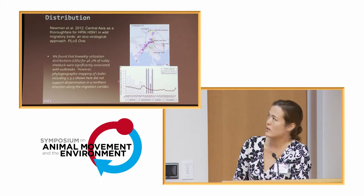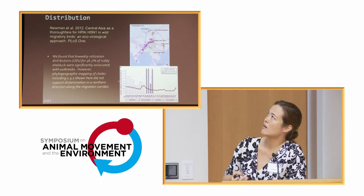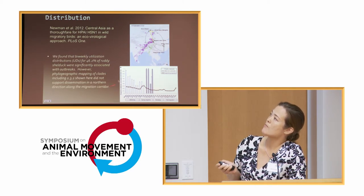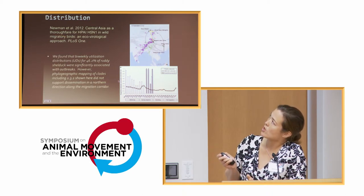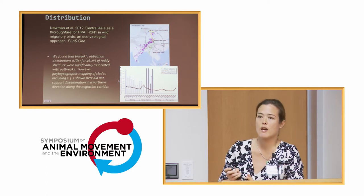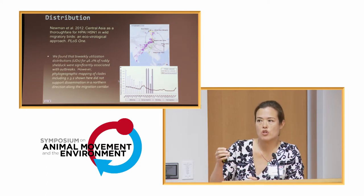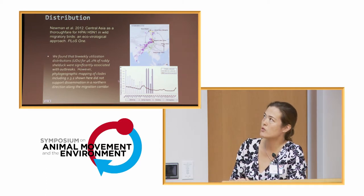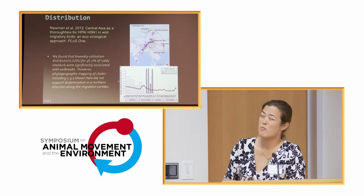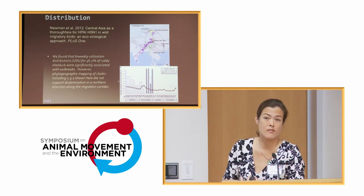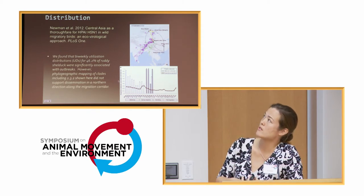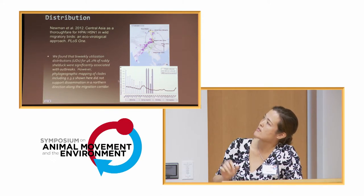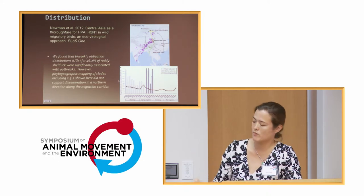One thing we tried to do was look at the phylogenetics, and this is something we need to work on further. The same study showed a southward movement of virus evolution, though it didn't exactly match the phylogenetics. Part of that could be due to the biased availability of isolates within the gene sequence databases. We think it's important to try and look at the virology as well as the movement ecology.